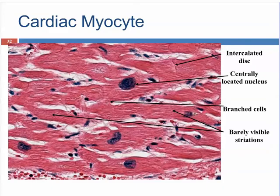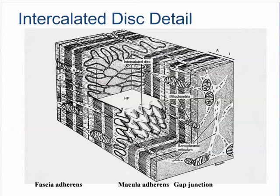Cardiac myocytes are shown here as a review of cardiac striated muscle cells. Recall that they have one nucleus, the cells are branched, and the striations are not as obvious as in striated skeletal muscle cells. Also recall that cardiac myocytes are connected end-to-end by intercalated discs.